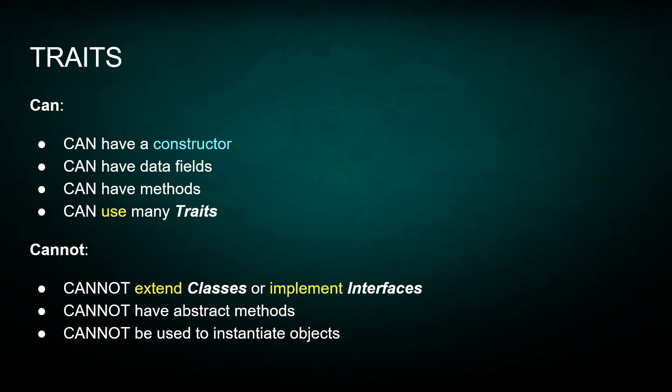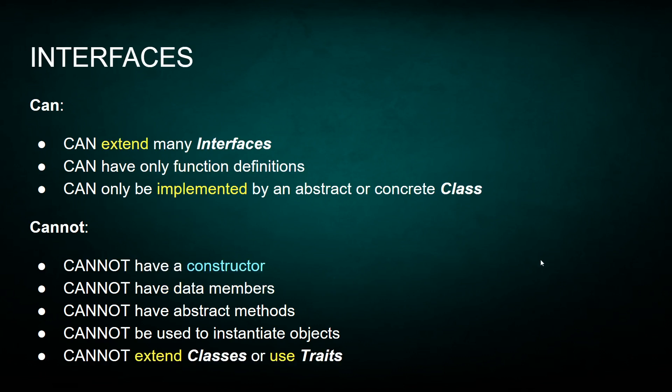Here are the interfaces. Interfaces are very broad. They can extend many other interfaces. They can have only function definitions — that's important. And they can only be implemented by an abstract or concrete class. They cannot have a constructor. They cannot have data members. They cannot have abstract methods. And they cannot be used to create objects. Also, they cannot extend classes or use traits.